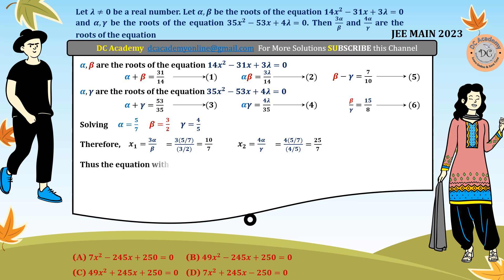Our job is to find the equation whose roots are x₁ and x₂. The equation is x² - (x₁ + x₂)x + x₁x₂ = 0.